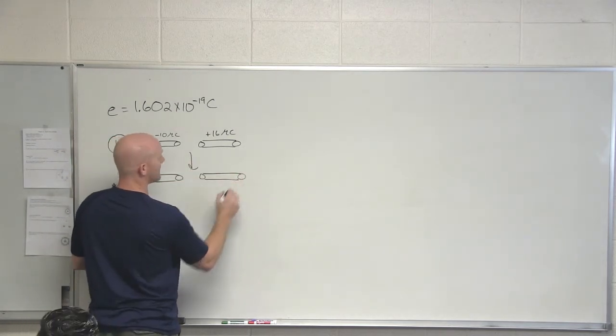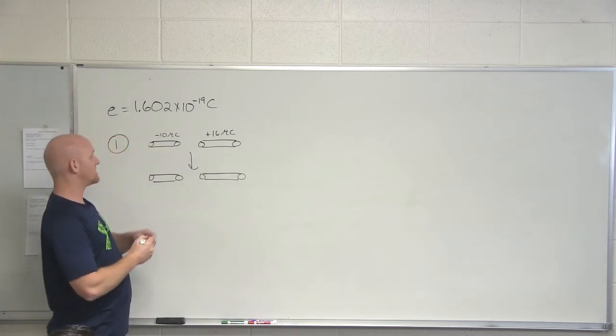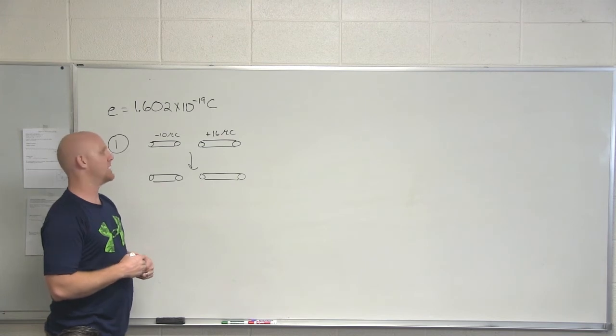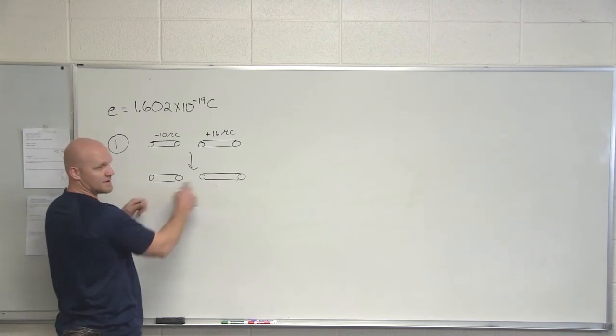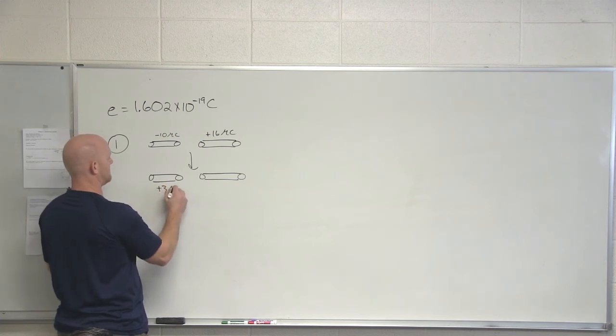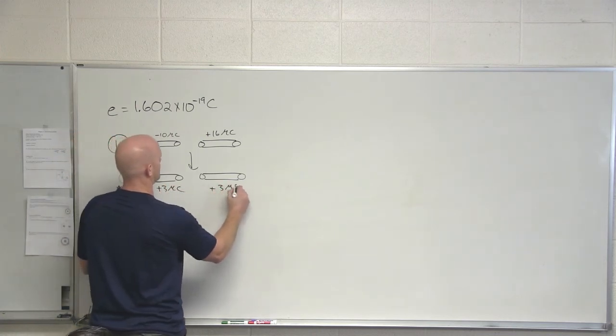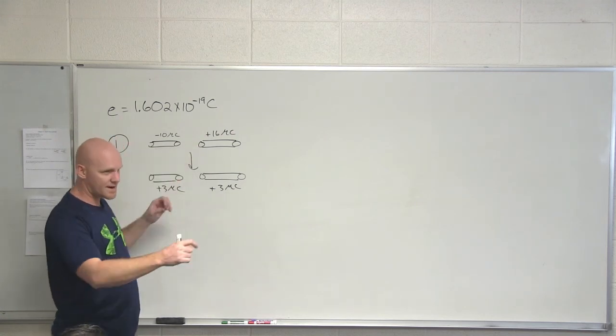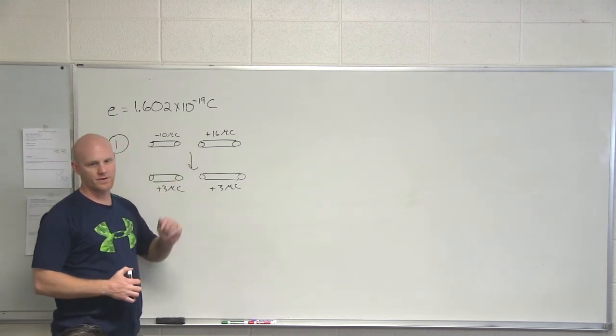How do I figure out how much charge they both end up with? Just add up their total charge and divide it by two. What total charge is present on both rods combined? Six microcoulombs, positive six microcoulombs. In the end, how much charge will each of them have? Positive three microcoulombs. Put them in contact, long enough for it to equilibrate, pull them back apart, and now they've both got positive three microcoulombs of charge.